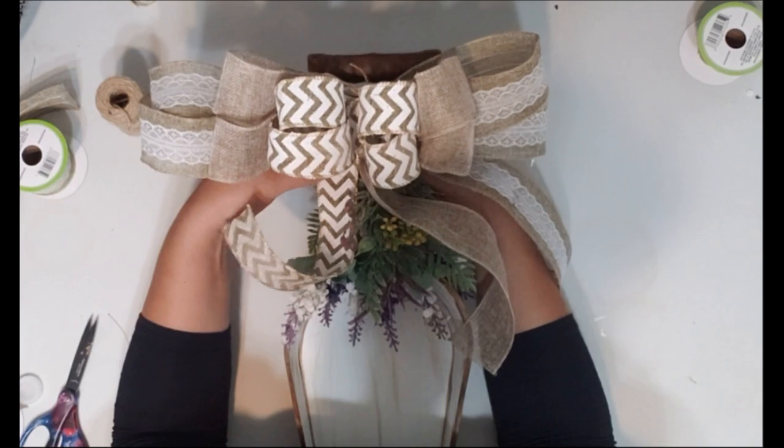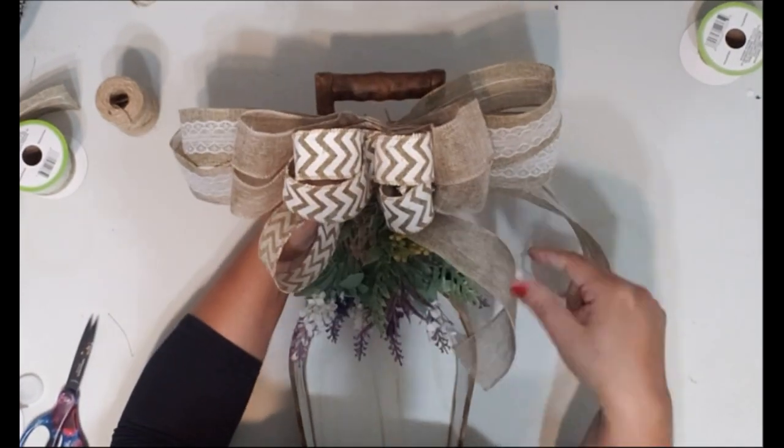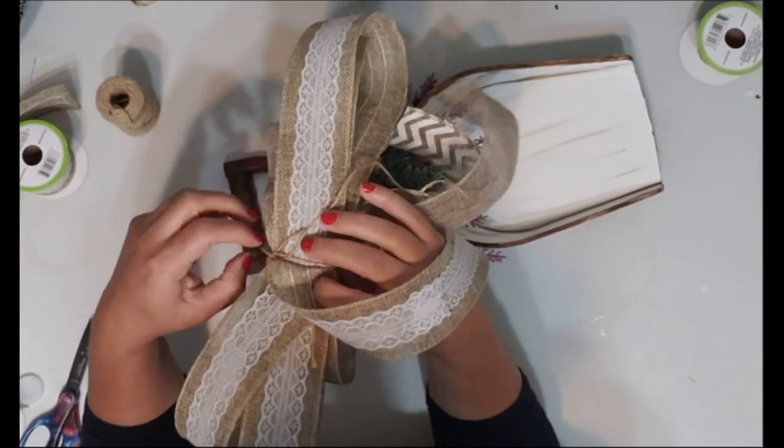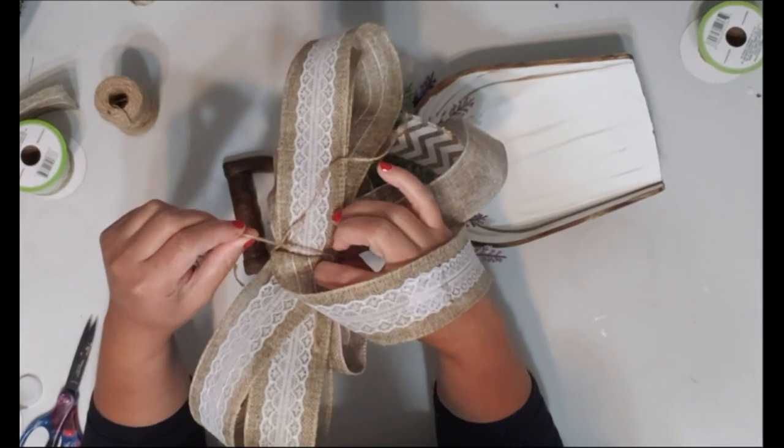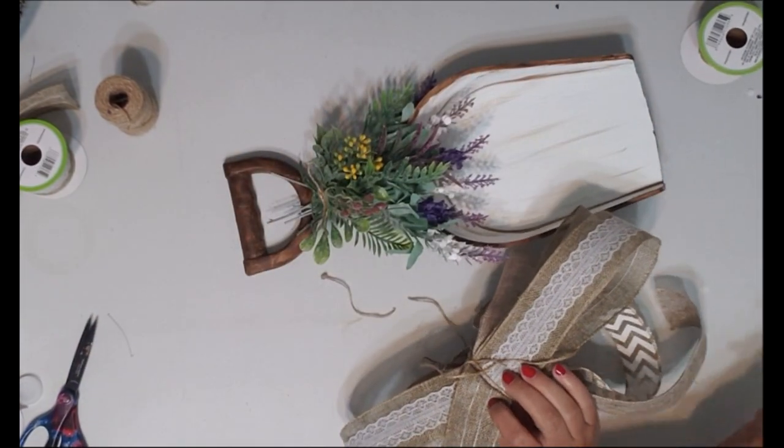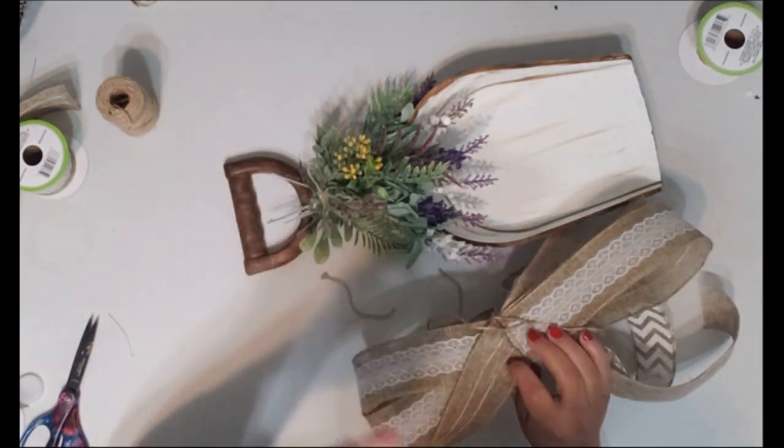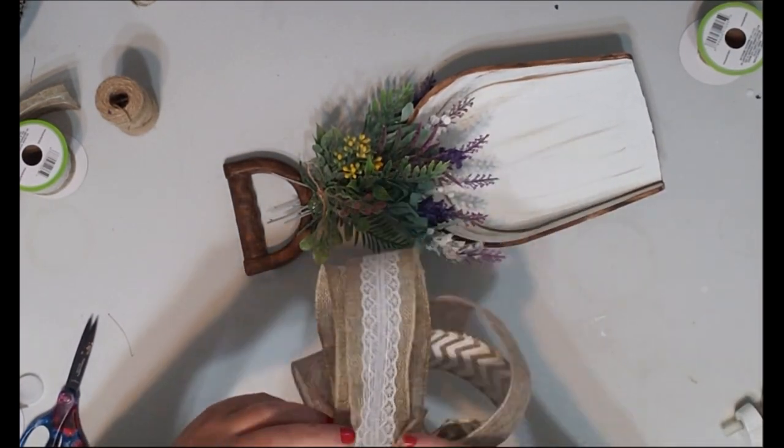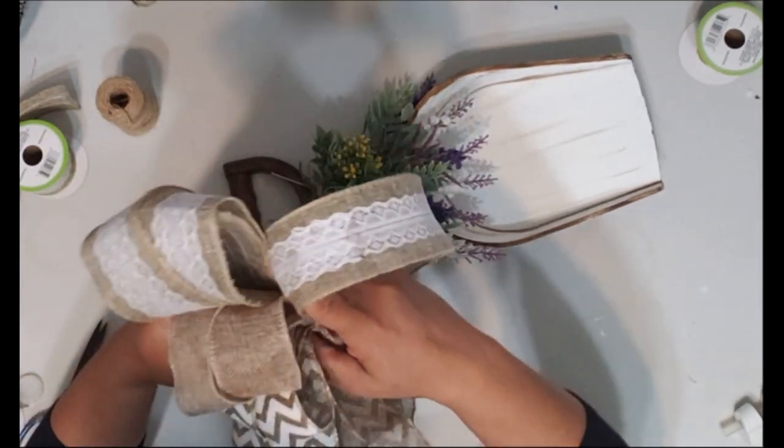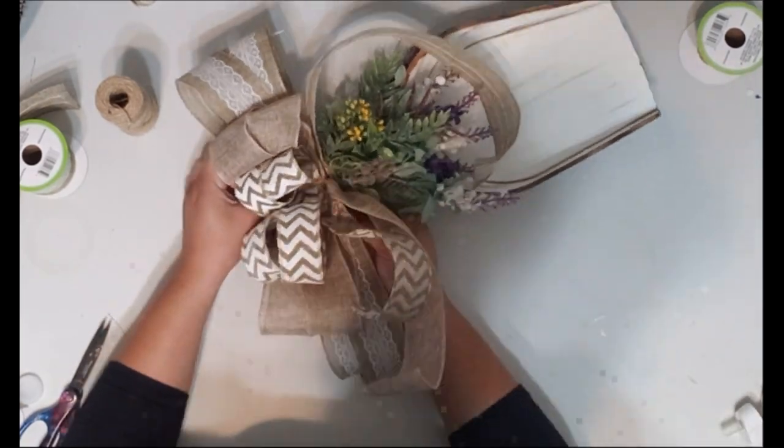Then we're going to take another piece of jute twine to tie the bow on to the center here. That's why I said you kind of want to place your flowers on there first just so you know where the bow is going to land. Just make sure you tie the jute twine in the back and go ahead and just put a knot back there and make it long enough where you can wrap it around. We're just going to take a little bit of hot glue and place it up here and that's to hold the bow down. So just place your bow right on top here.